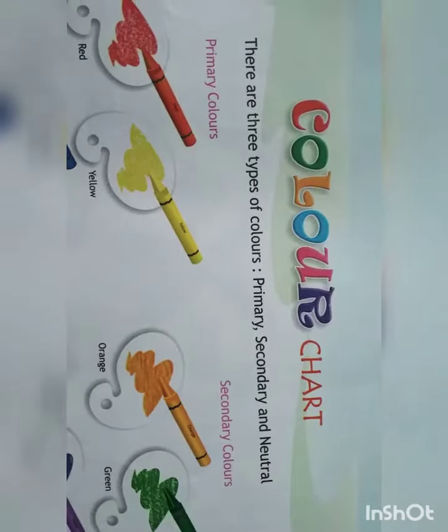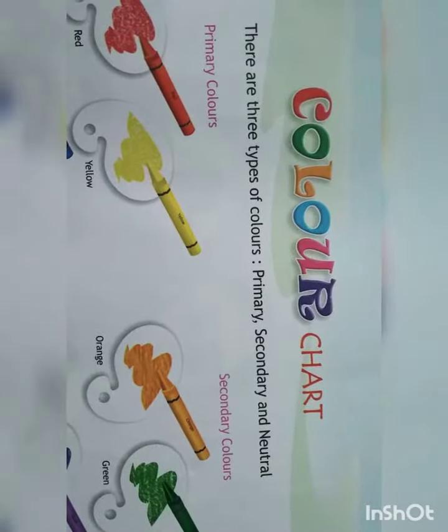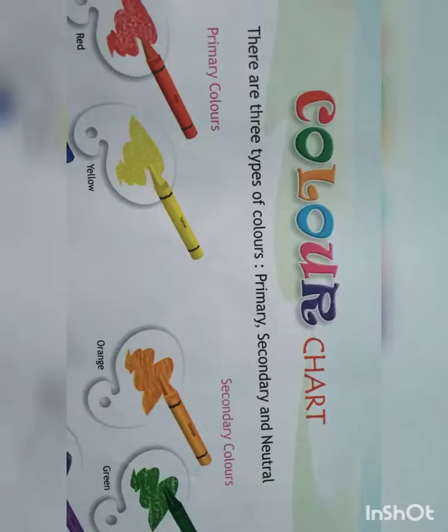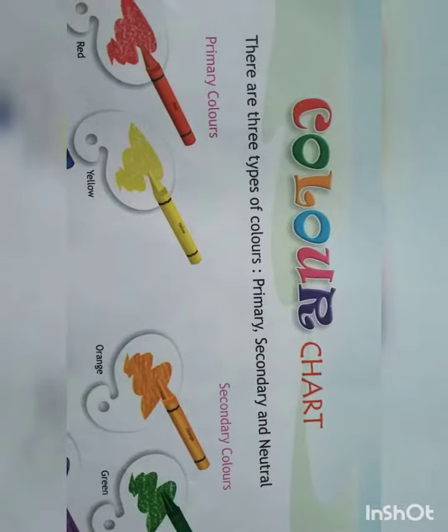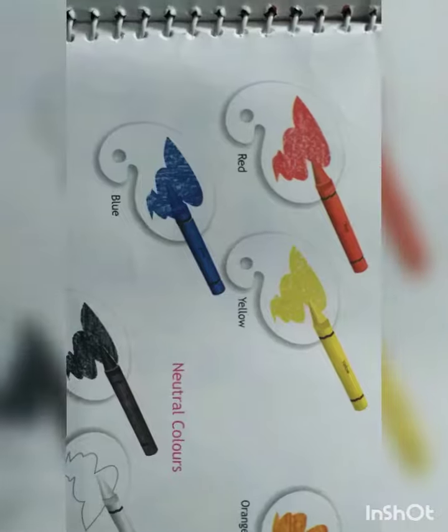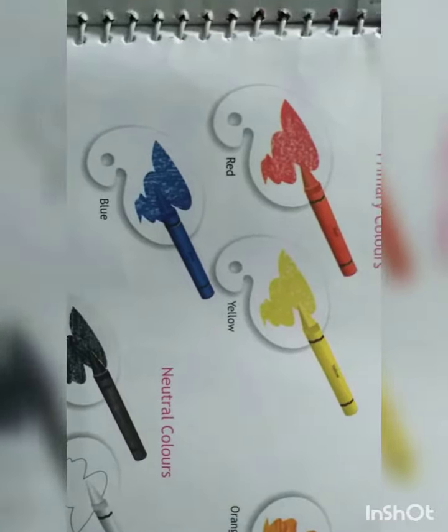Color chart: There are three types of colors: Primary, Secondary, and Neutral. Primary colors are Red, Yellow, and Blue.